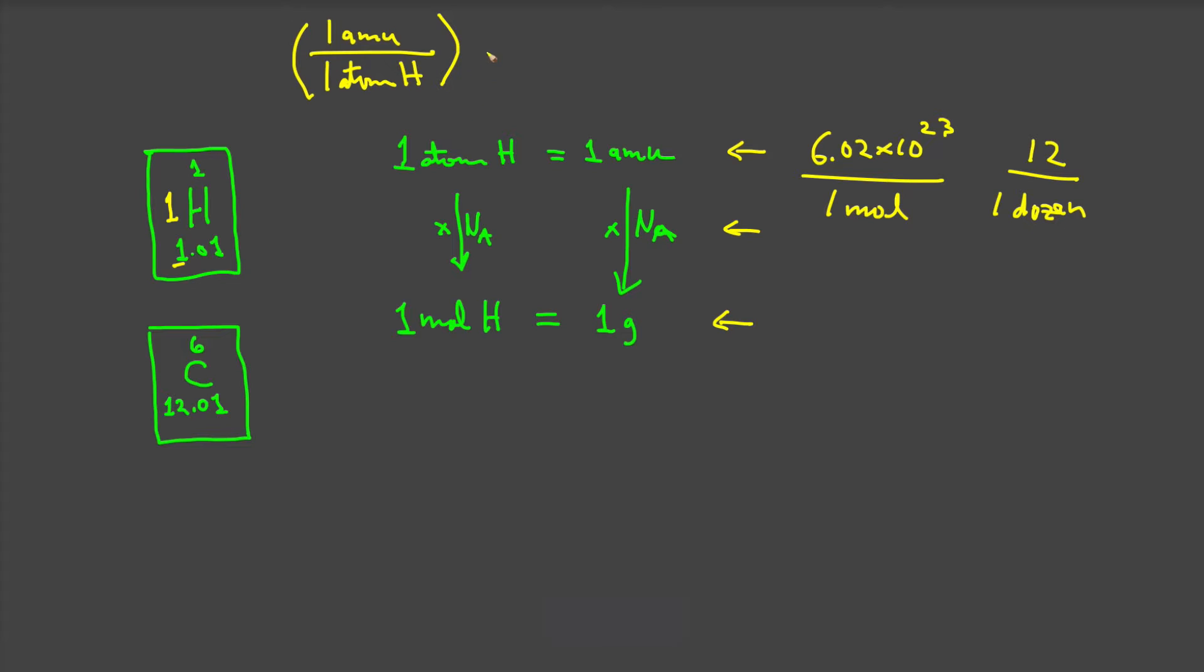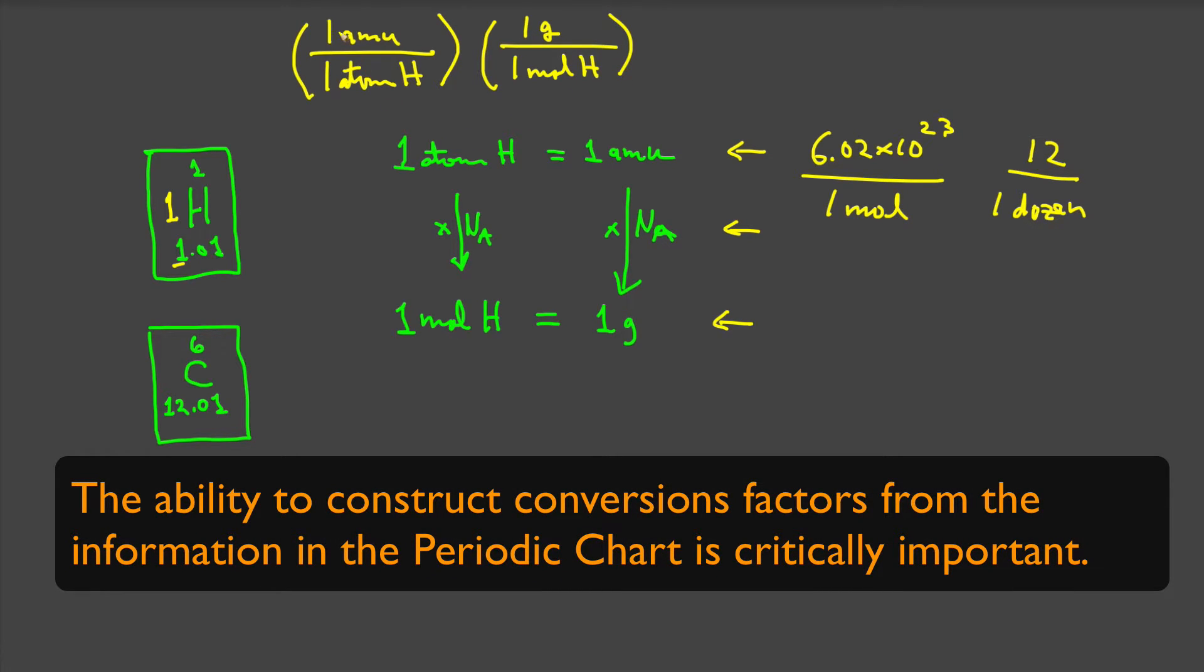For every one mole of hydrogen, you will have a mass of one gram. Notice the digits one to one stay the same. All you're changing are the units in the scale up.